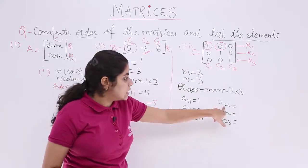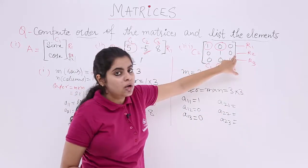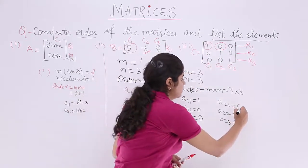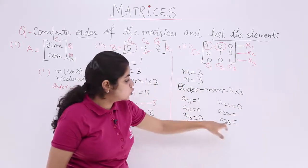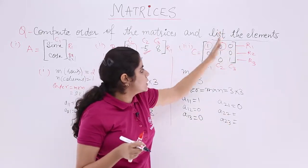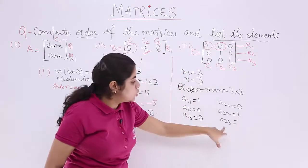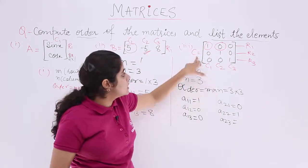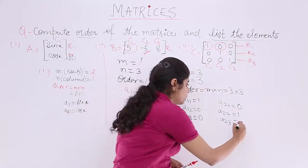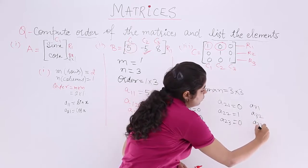A21 means second row, first column. What about the second row? The 0-1-0 row. What about the first column? This. So it is 0 only. A22 means second row, second column. So second row, second column is 1. A23 means second row, third column, which is 0.